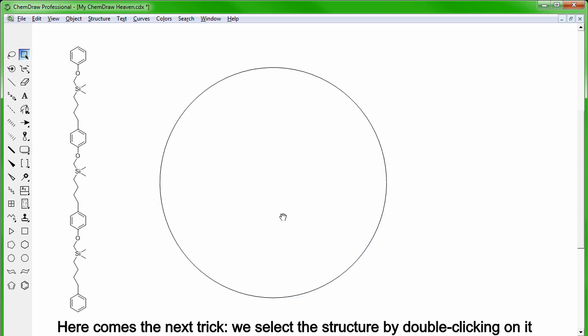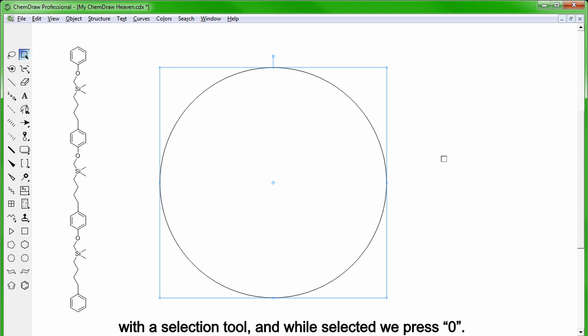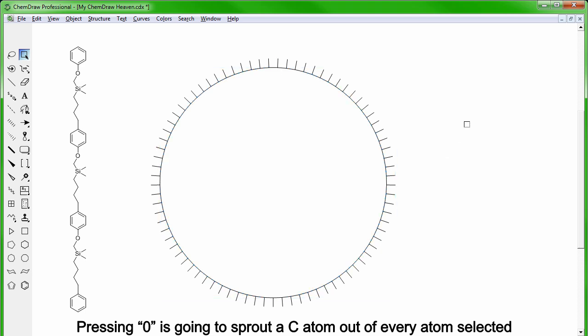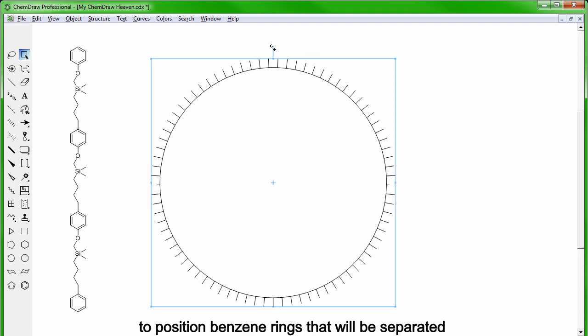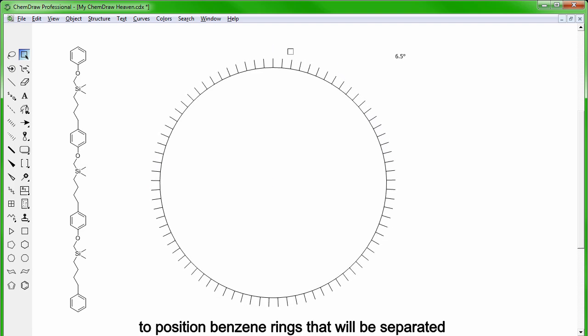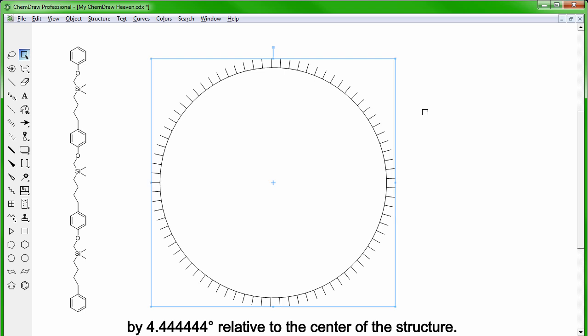Here comes the next trick. We select the structure by double-clicking on it, and while selected, we press 0. Pressing 0 is going to sprout a carbon atom out of every other atom selected, in our case 81 carbon atoms. So there you have it, a neat circular structure on which we are going to position benzene rings that will be separated by 4.444444 degrees relative to the center of the structure.